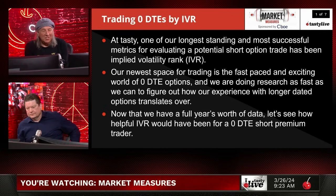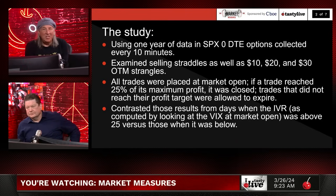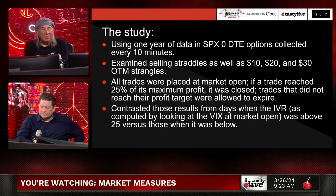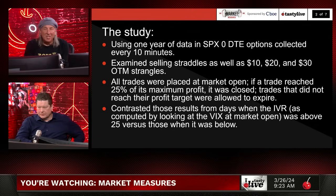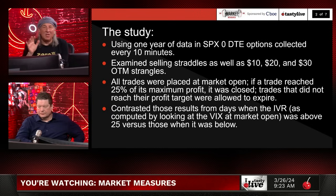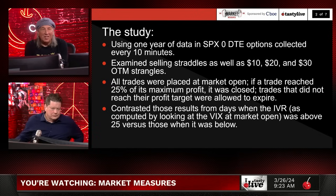We got a lot of questions on this. Using one year of data in the SPX, collected every 10 minutes — that's what we've been doing from the start. We examine selling straddles as well as 10, 20, and 30 delta out-of-the-money strangles. Personally, 30-delta OTM strangles is too far in the SPX with low volatility, so I've been using 20 deltas. They tend to average around four to five dollars for the strangle on the opening.